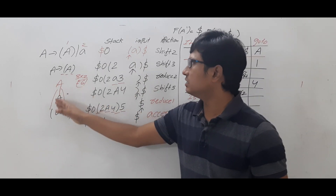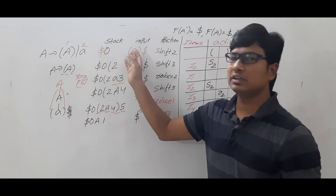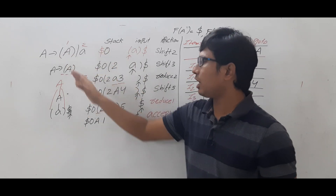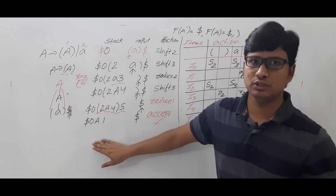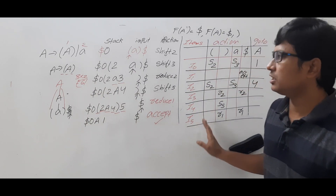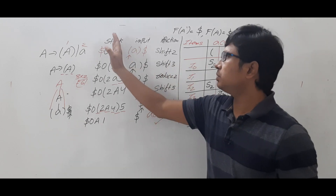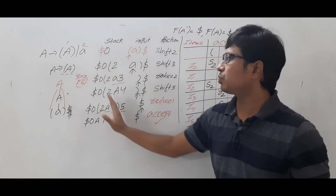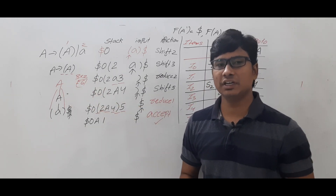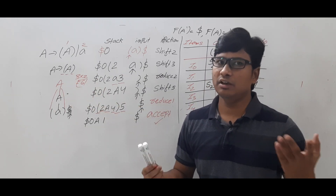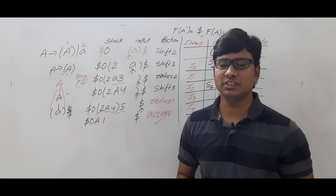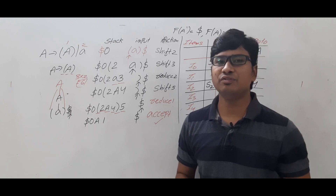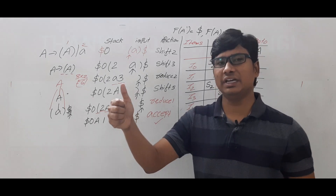I hope you have understood how from the given grammar I computed the LR(0) items, then the SLR(1) parsing table, and using the parsing table and stack how I computed the parsing process and the parse tree. If you still have any doubts related to this concept, feel free to ask in the comments — I will try to clear your doubts in less than 24 hours. Thank you for watching, have a nice day.